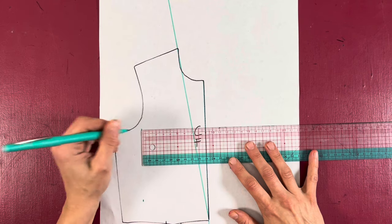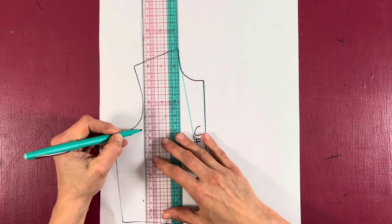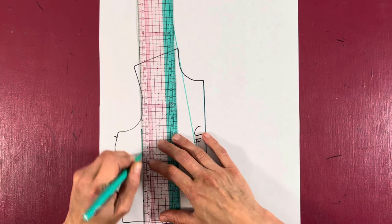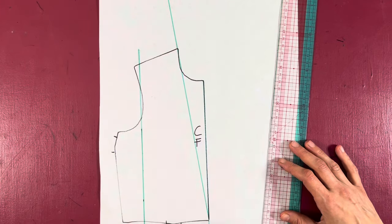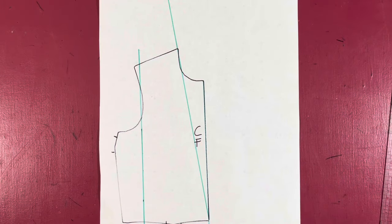and then we can draw a parallel line. And that is our stole. Next, we need to draw in our statement shawl collar. So I'm going to actually sketch it in first, how I want it to look.